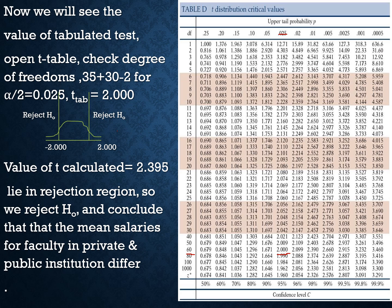The calculated T value of 2.395 falls in the rejection region (it exceeds the critical value of 2), so we reject H0. We conclude that the mean salaries for faculty in private and public institutions differ at the 5% significance level.